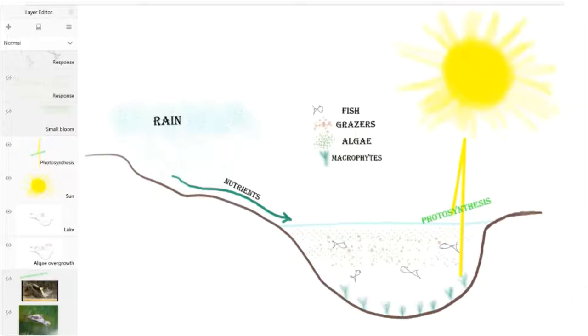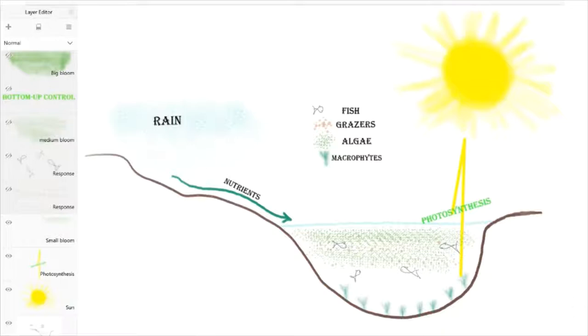And once plants have enough nutrients and they have enough light to grow, I have told you before that they grow. We've seen before that when plants grow, we have more grazers in the system as well. And with more grazers in the system, we have more fish in the system as well.